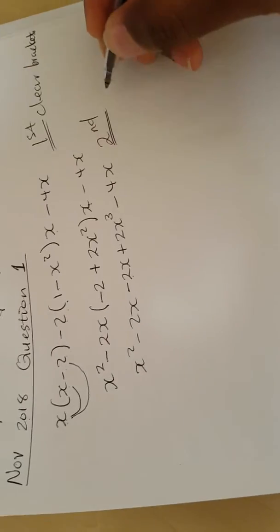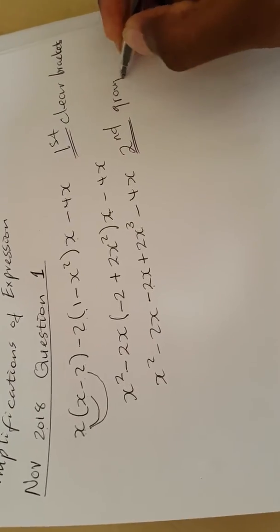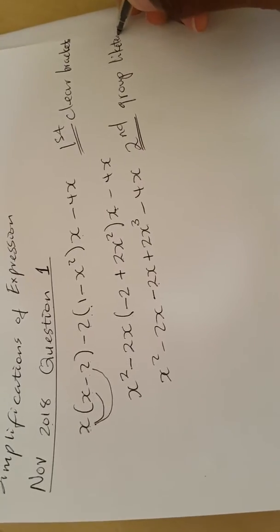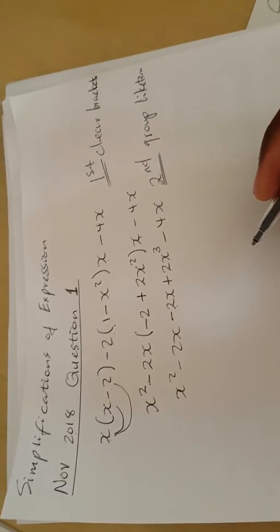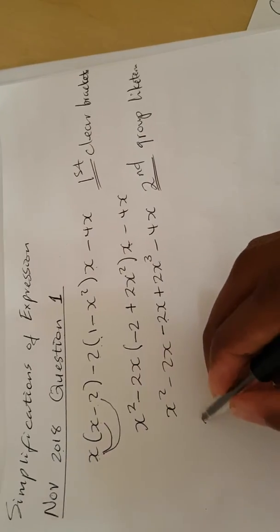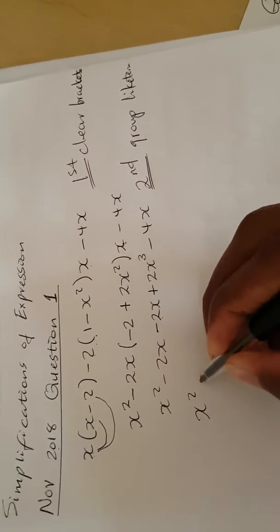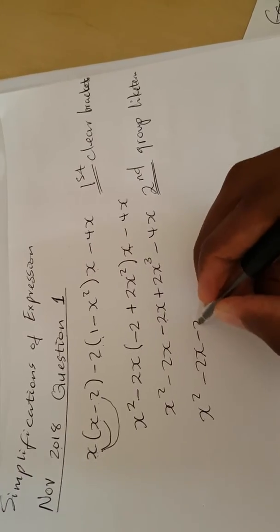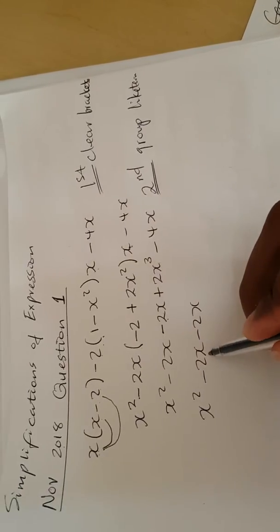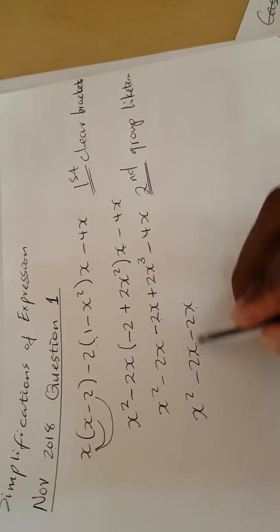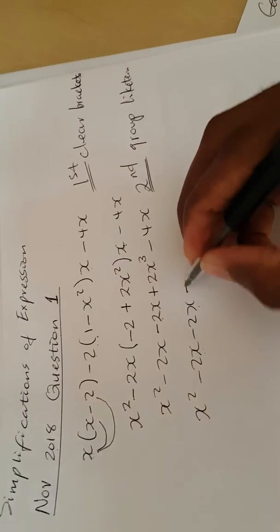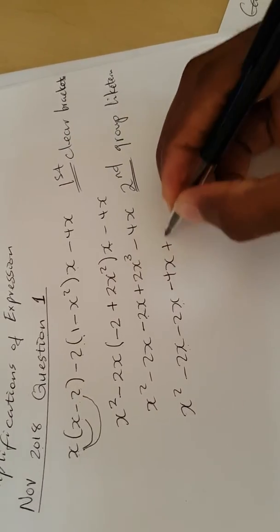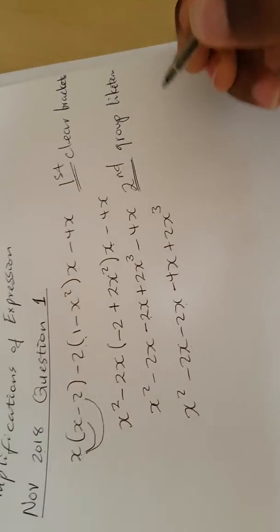The second step is to group like terms. So let's group the like terms now. We have x squared, minus 2x, then minus 2x. These 2x and 2x are like terms because they both have an x value. Minus 4x is also a like term, plus 2x cubed.